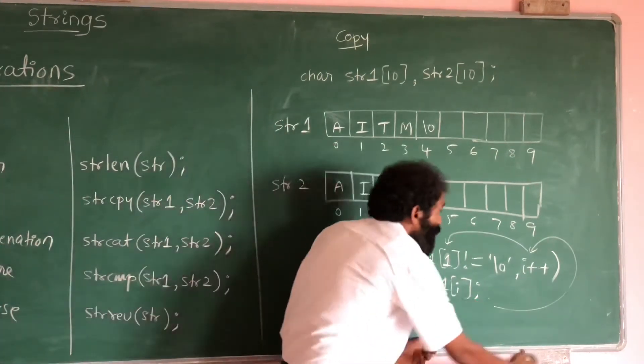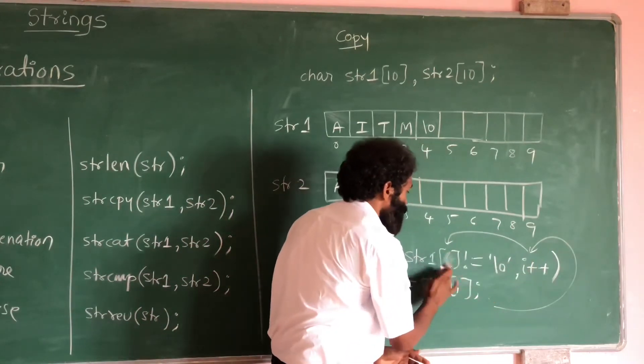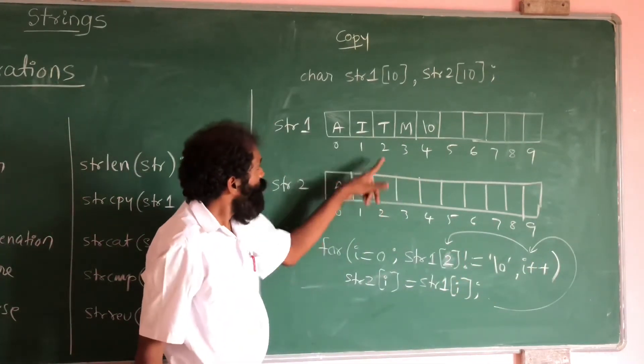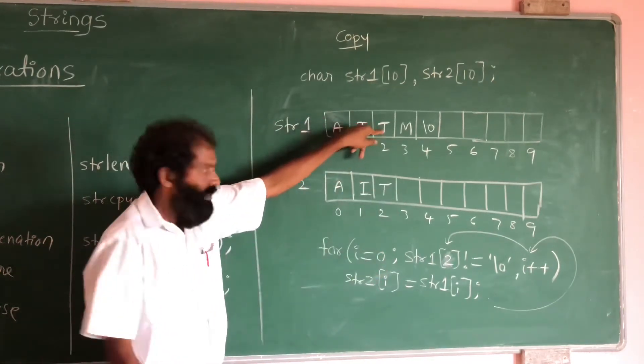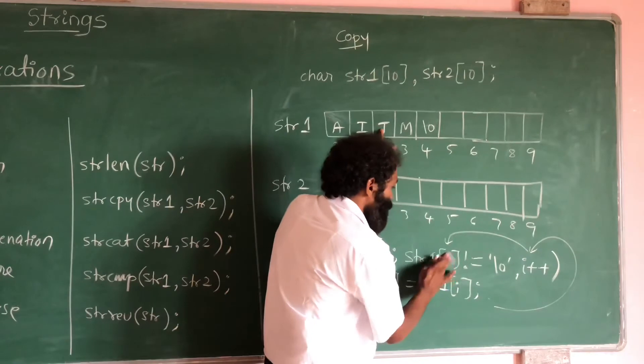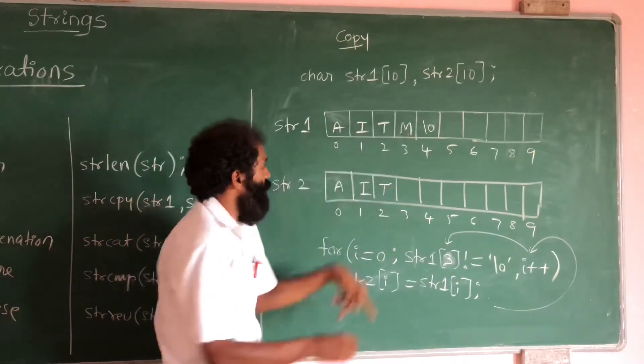Now I value is incremented. I value becomes 2. 2 means T will be copied. Now again I value will be incremented. It becomes 3. Then M will be copied.